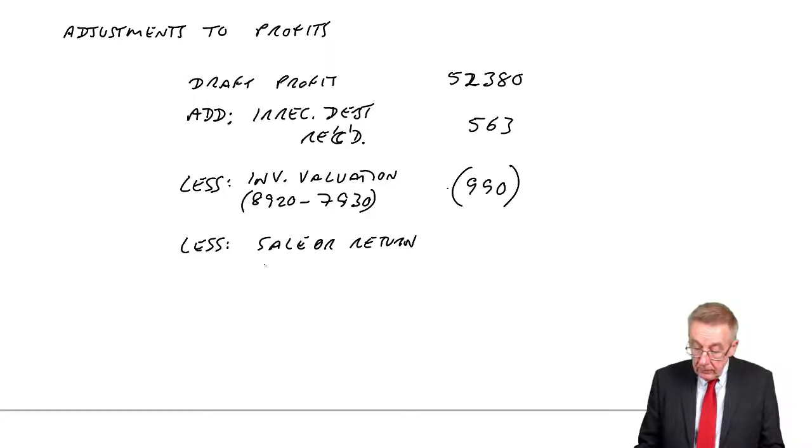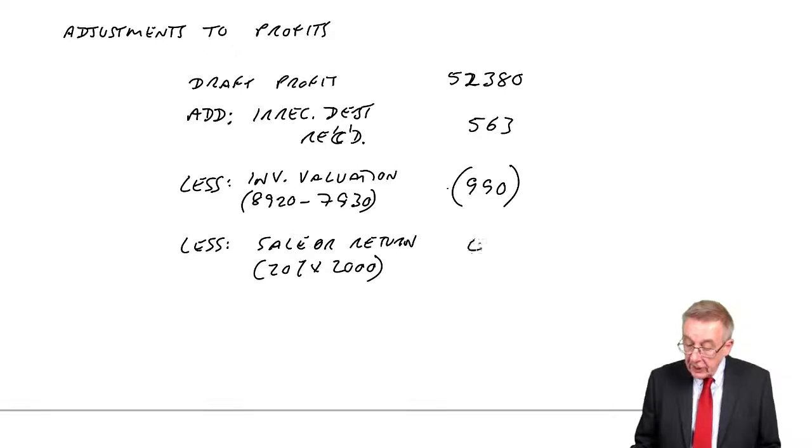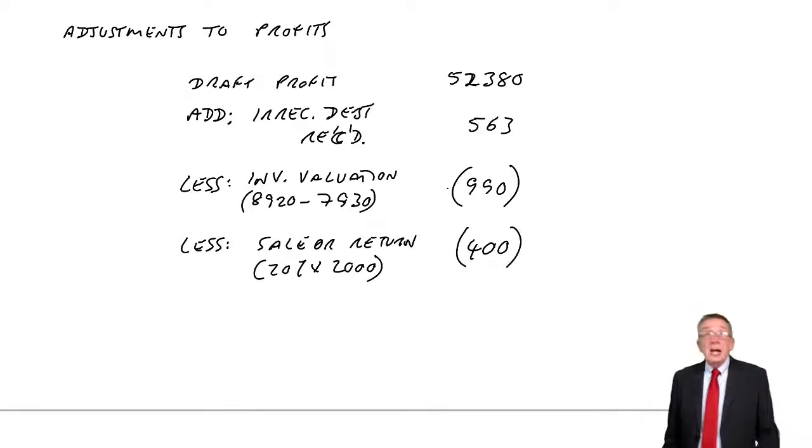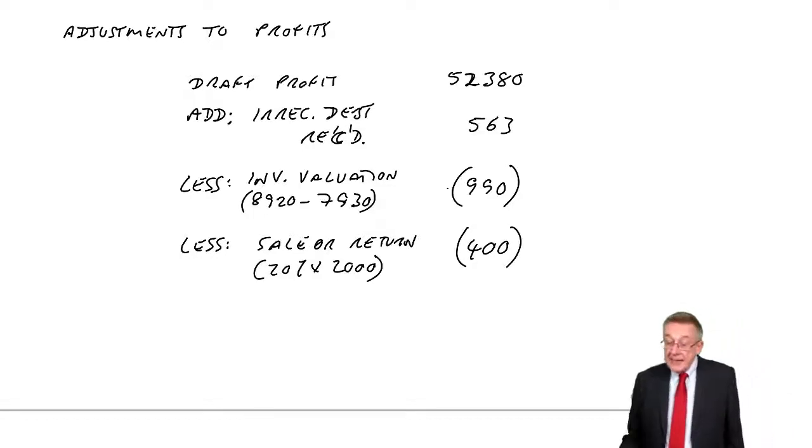And that profit will be included in that $52,380. Well, we shouldn't have included profit. We haven't sold it yet. We've only sold it if later we're told he's going to buy it. And so we need to remove that profit. How much is it? We were making a profit of 20% on the cost. The cost was $2,000, and so we recorded profit of $400 and we shouldn't. We need to remove it.